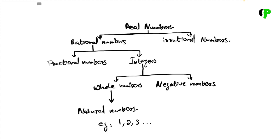Natural numbers — we have zero as well. We are going to take zero and 1, 2, 3. Now, negative numbers. If we are talking about negative numbers, we are going to include negative numbers.